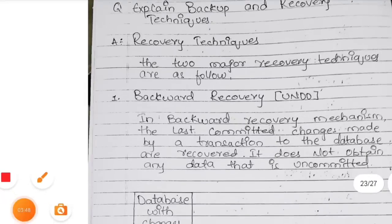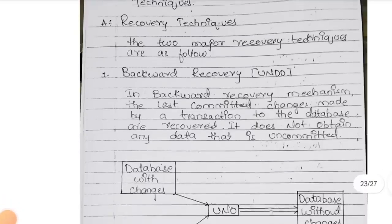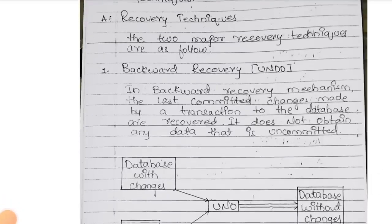Backup and recovery techniques: for example, once you delete a photo, it goes to the recycle bin or trash. You can undo — if you delete a photo, you can undo to recover it. That is a type of backup and recovery technique.